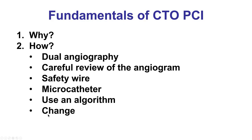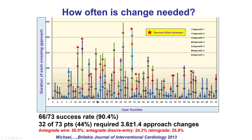Changing strategy is critical when performing CTO-PCI. This is prominently featured in the hybrid algorithm, the global CTO-crossing algorithm, and the guiding principles, because the initial CTO-crossing strategy is successful in only about half of cases. Changing to one or more alternative strategies is therefore important to finally achieve success.